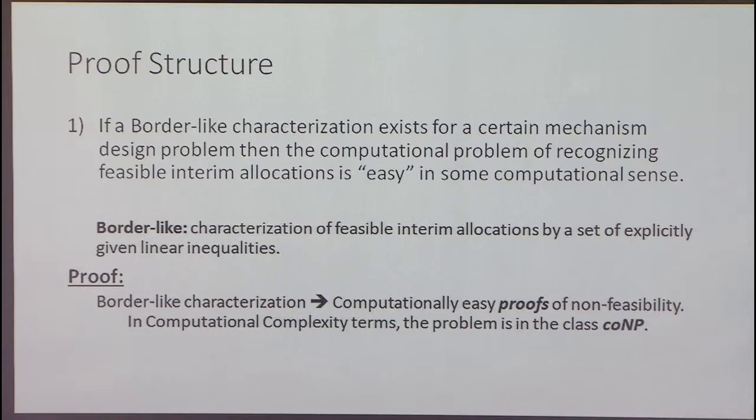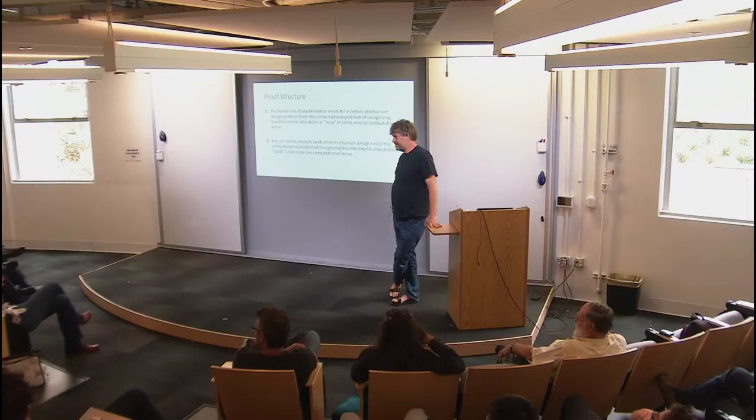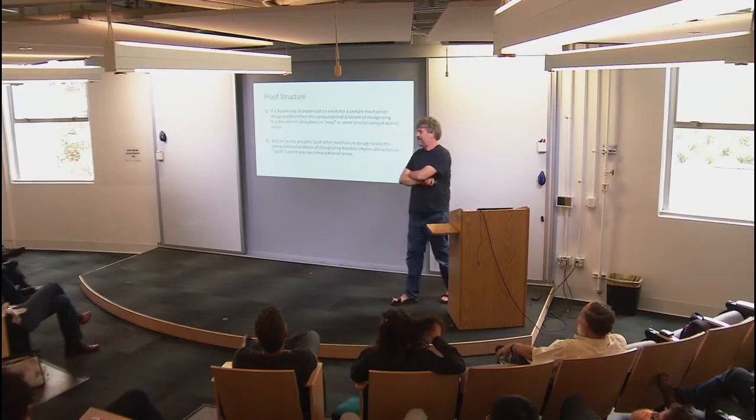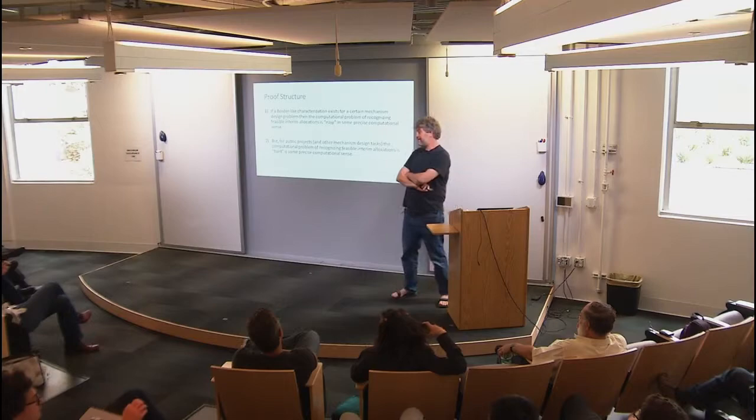Notice I'm using a computational intractability assumption — complexity in the usual computational sense — and the outcome is that you're not going to get a mathematical theorem that economists may like. I'm using complexity to say something about mathematical structure. If you have a Border-like characterization, then you can tell whether something is outside the polytope — you have a proof. That gives at least a co-NP characterization of being outside, so the whole ellipsoid argument gives a P^{co-NP} kind of approach.